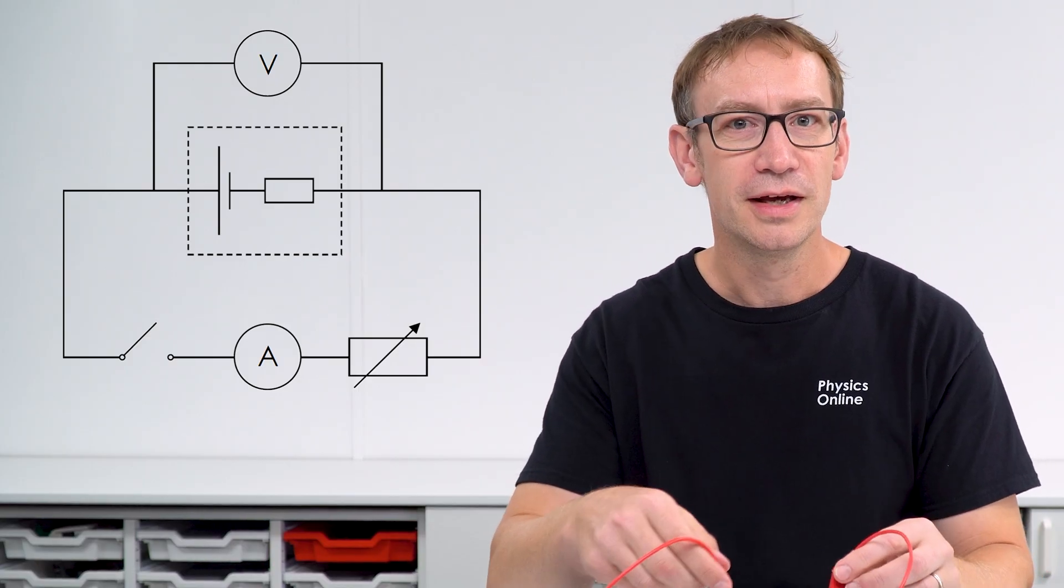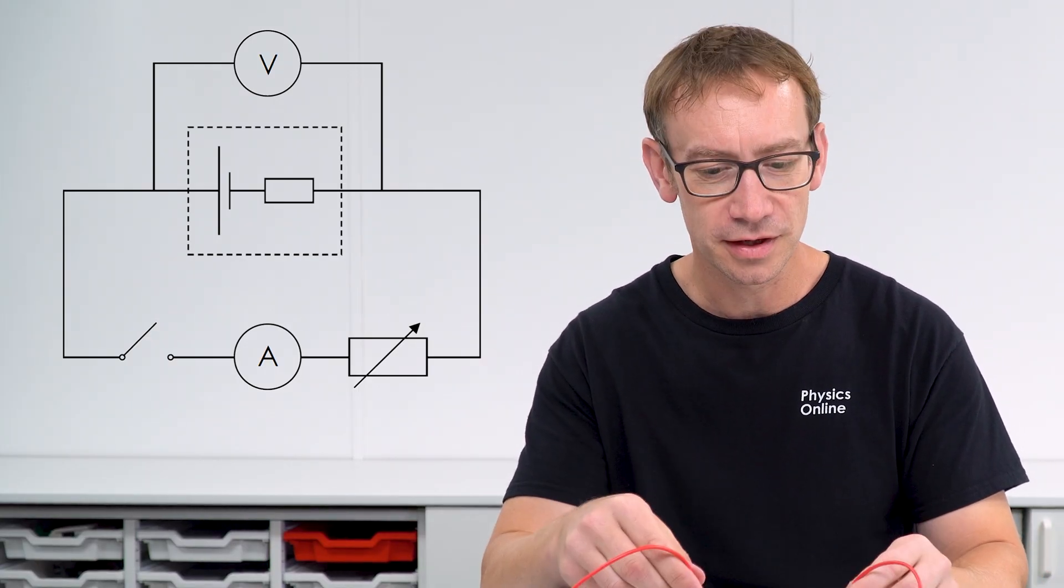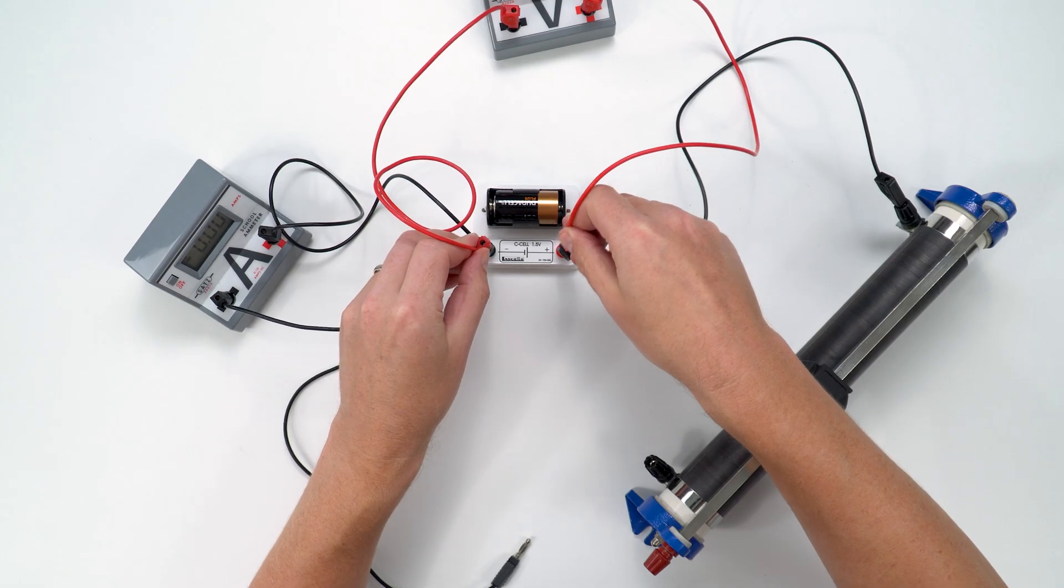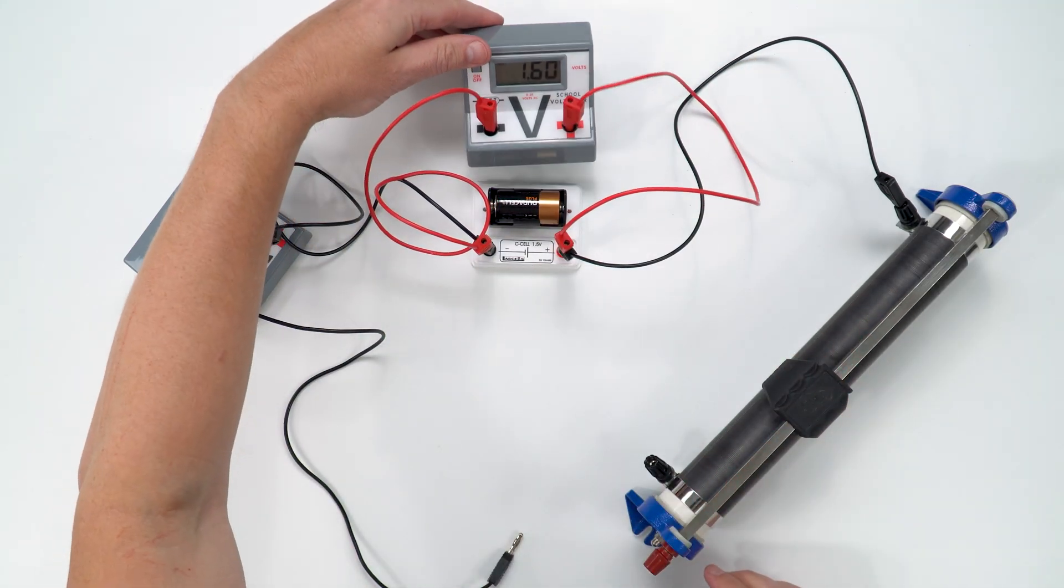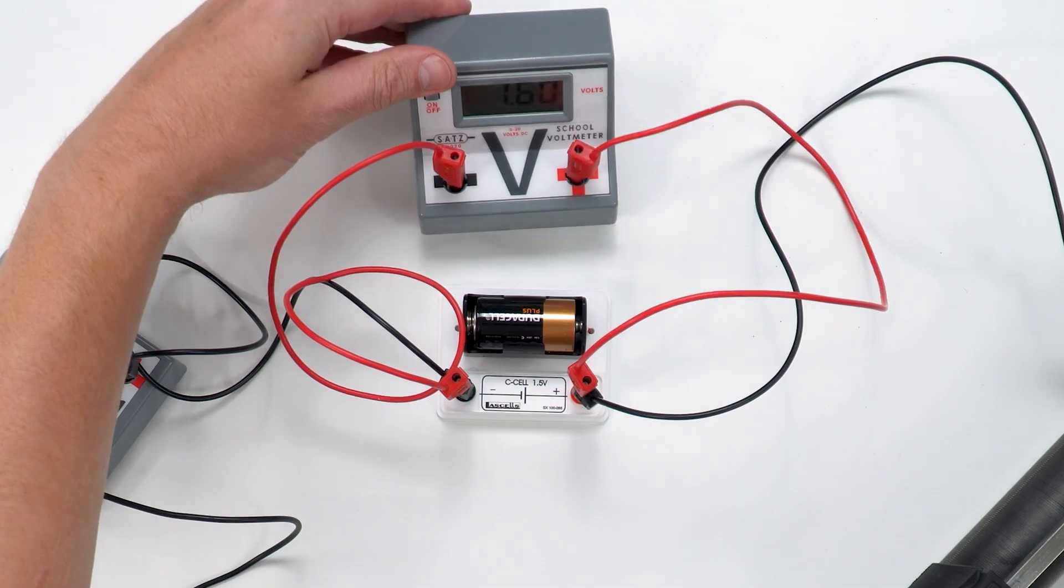the terminals, and this is often referred to as the terminal PD. So I'm going to put that in there, and at the moment when nothing else is connected this has a value of 1.6 volts.